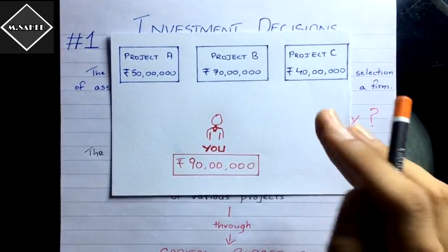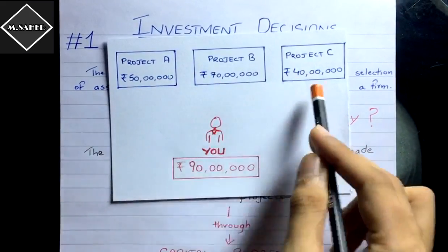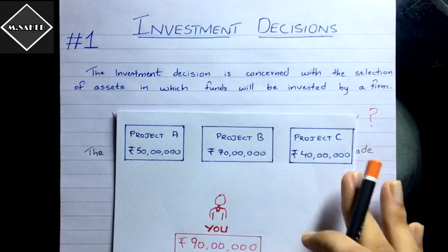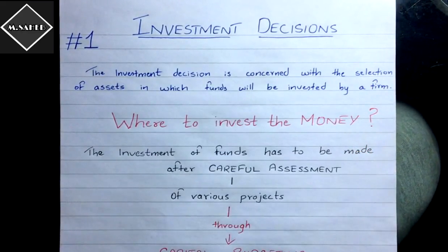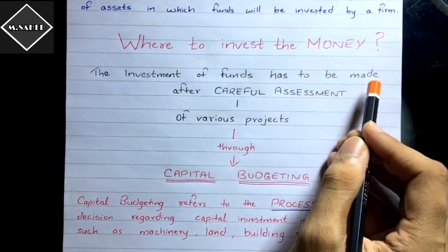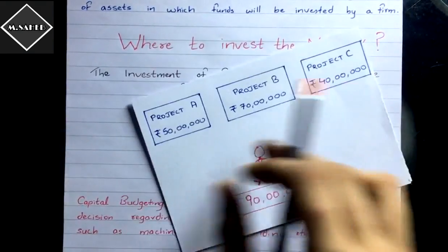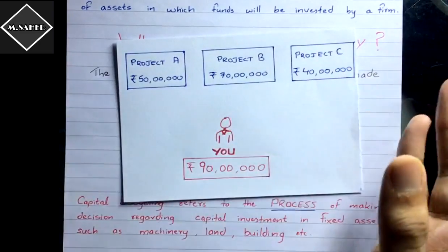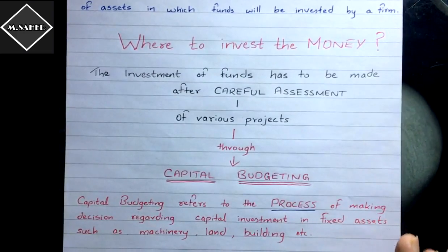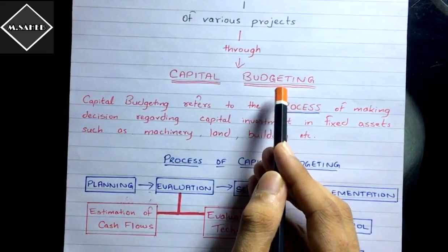You have to do some math and see which project is most suitable and most viable for your company. The investment of funds has to be made after careful assessment of various projects. There may be hundreds of opportunities, not just project A, B, C, and you have to analyze all of them through capital budgeting.